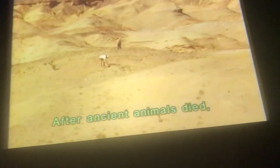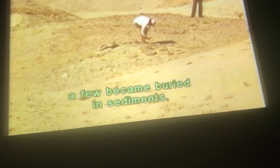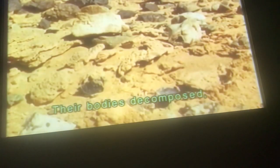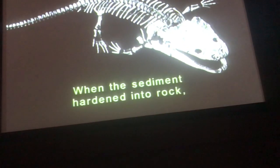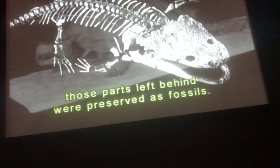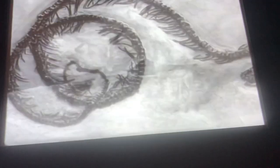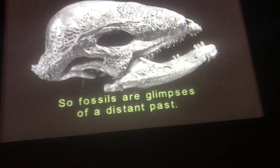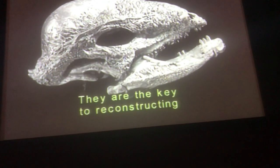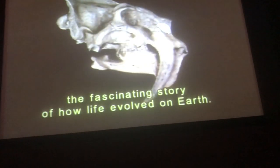Fossils. After ancient animals died, a few became buried in sediments. Their bodies decomposed, leaving behind hard parts like bones and teeth. When the sediment hardened into rock, those parts left behind were preserved as fossils. So fossils are glimpses of a distant past. They are the key to reconstructing the fascinating story of how life evolved on Earth.